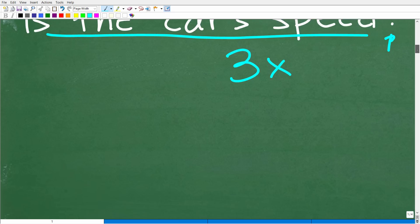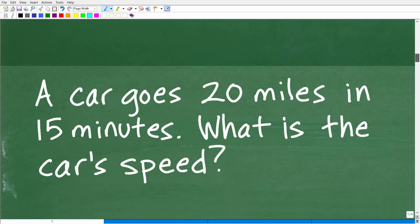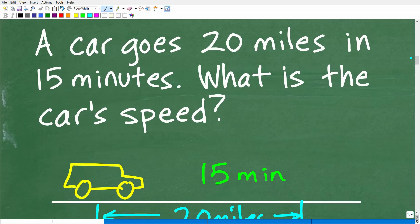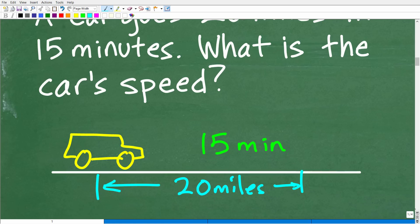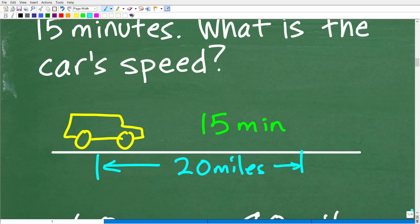So let's take a look at a common sense approach to figure this out. In any math word problem, you want to model what's going on. A good way to do this particular problem is just kind of come up with a quick sketch. So here is our lovely car. It's speeding down the highway. And it covered 20 miles in 15 minutes.